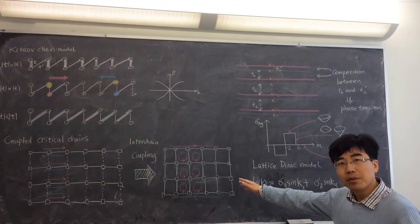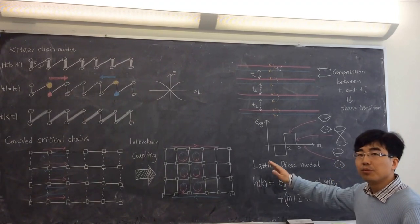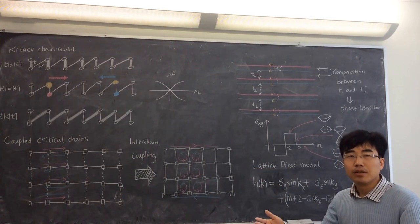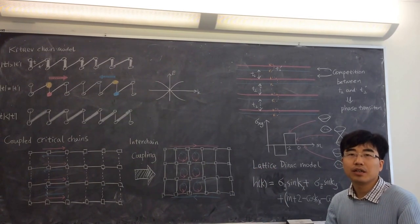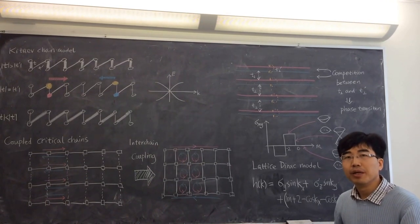In this topological quantum anomalous Hall model, you can see clearly that when I tune the system to a critical point by making a competition between inter-chain coupling and intra-chain coupling, then the critical point itself is a massless Dirac fermion in two dimensions.